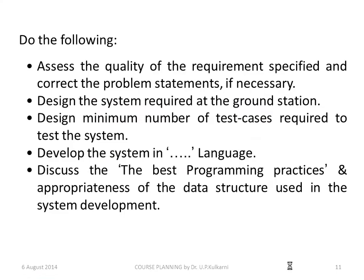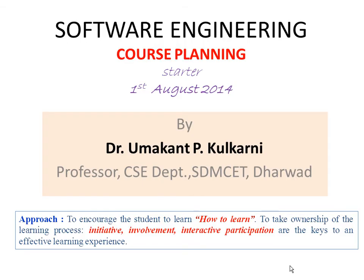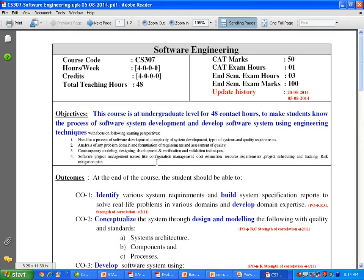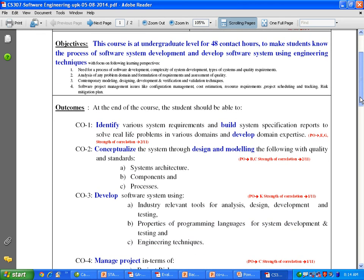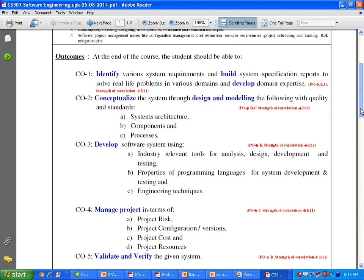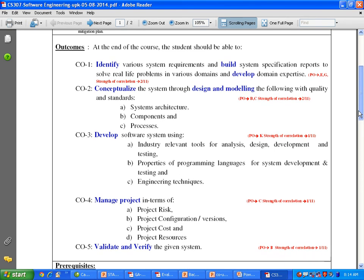Going back to the theme of today's topic — defining course outcomes — the course outcomes of this software engineering course are clearly stated: identifying system requirements and building reports; developing domain expertise; conceptualizing the system through design and modeling, system architecture, components, and processes; developing software systems using tools, programming language properties, and engineering techniques; managing project risk, configuration, cost, and resources; and validating and verifying the given system. This focuses more on doing things rather than simply memorizing and reproducing.